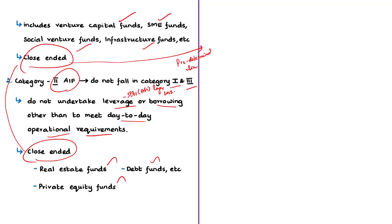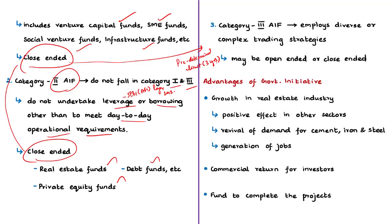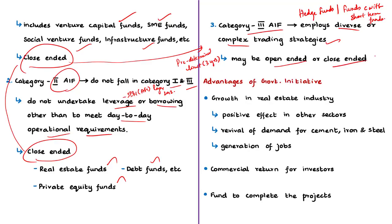The third is Category 3 alternative investment funds. Those AIFs which employ diverse or complex trading strategies are categorized as Category 3. This includes hedge funds or funds which trade with a view to make short-term returns, or open-ended funds for which no specific incentives or concessions are given by the government or any other regulator. Category 3 AIFs may be open-ended or close-ended.